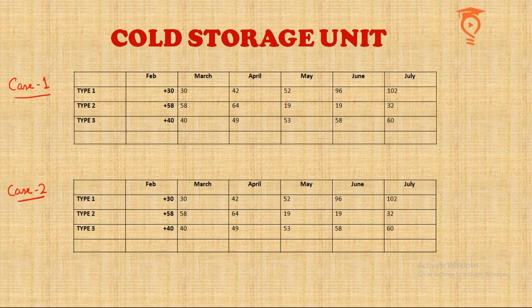As mentioned in the question, one of Type 1, Type 2, and Type 3 is low quality, one is medium quality, and one is high quality. The low quality ones perish after two months, medium quality after three months, and high quality after four months.